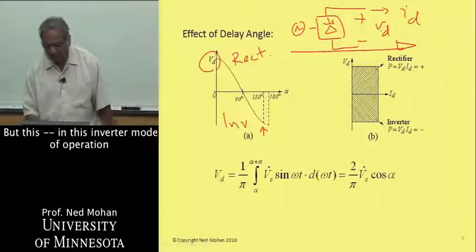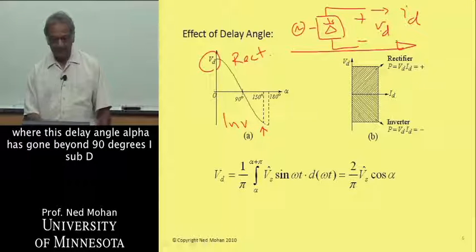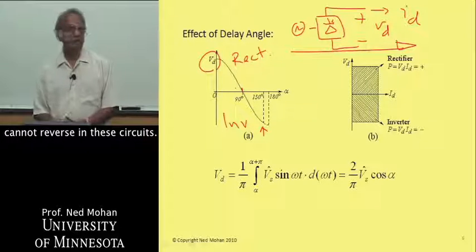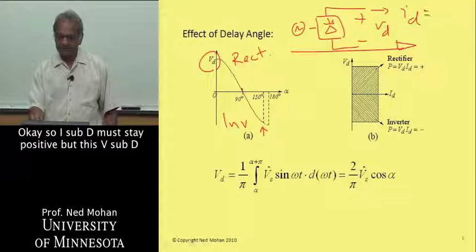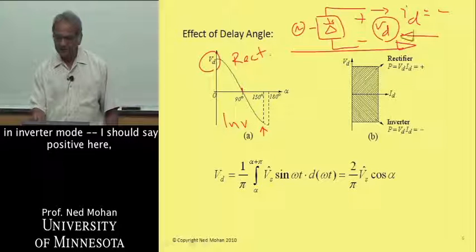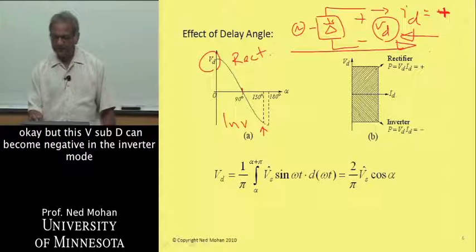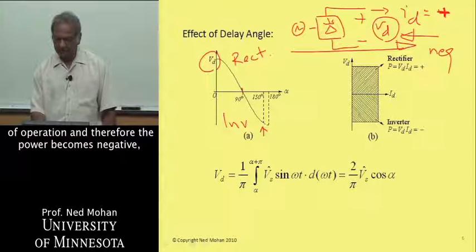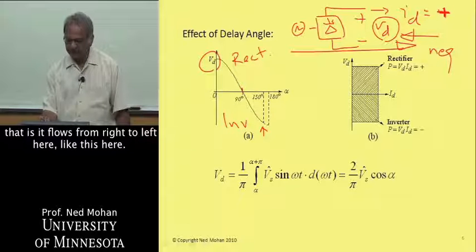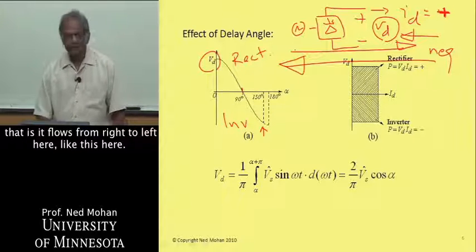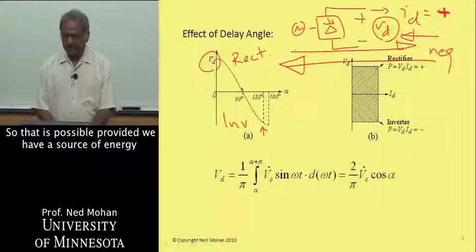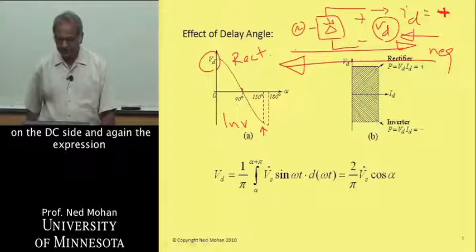But in this inverter mode of operation, where the delay angle alpha has gone beyond 90 degrees, I-sub-D cannot reverse in these circuits. I-sub-D must stay positive, but V-sub-D can become negative in the inverter mode of operation. Therefore, the power becomes negative — that is, it flows from right to left. This is possible provided we have a source of energy on the DC side.